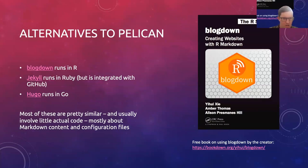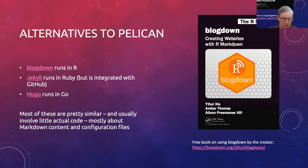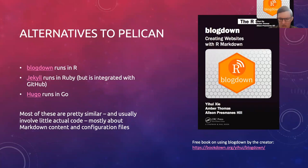Alternatives to Pelican that work basically the same way: there's Blogdown, which runs in R; there's Jekyll, which runs in Ruby — the advantage for Jekyll is it's integrated with GitHub, so you'll sometimes find nice templates that automatically build in GitHub. Then there's Hugo, which runs in Go. All of them mostly use Markdown for their content and then it's just about writing some configuration files. If you want to try Blogdown, there's a free book on using it written by the creator — R is often quite good for having nice documentation pages available.